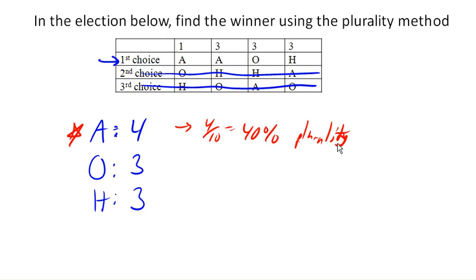Now, the plurality method is fairly well known and very easy to do. So what's the issue with it? Let's talk about Condorcet winners.